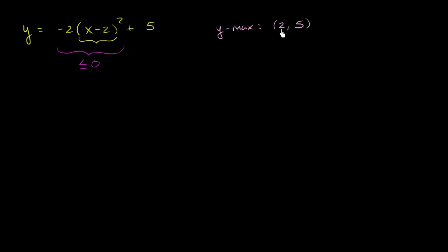And it is actually going to be the vertex. So if we were to graph this, so the point 2 comma 5.